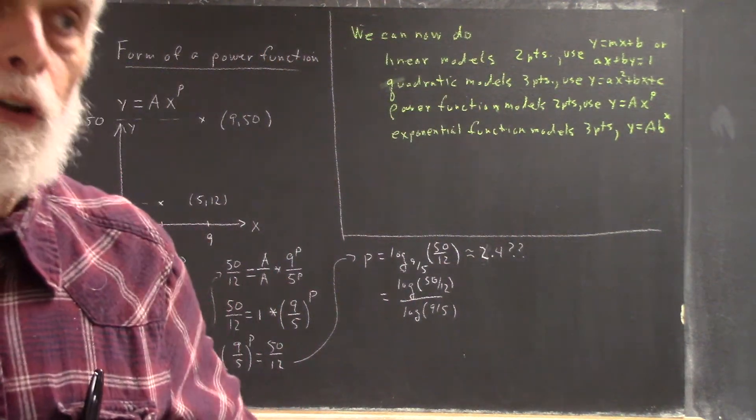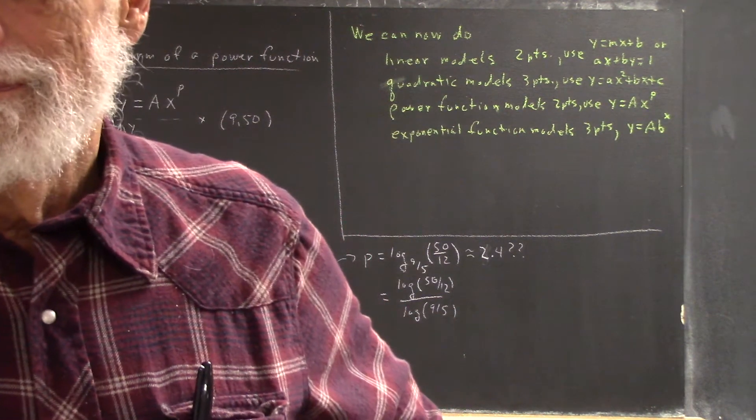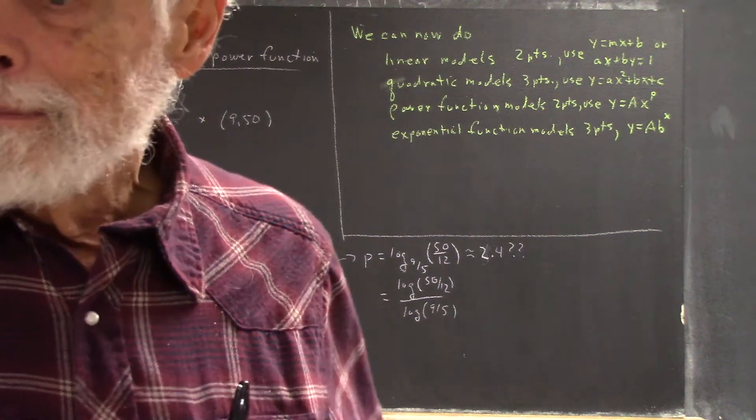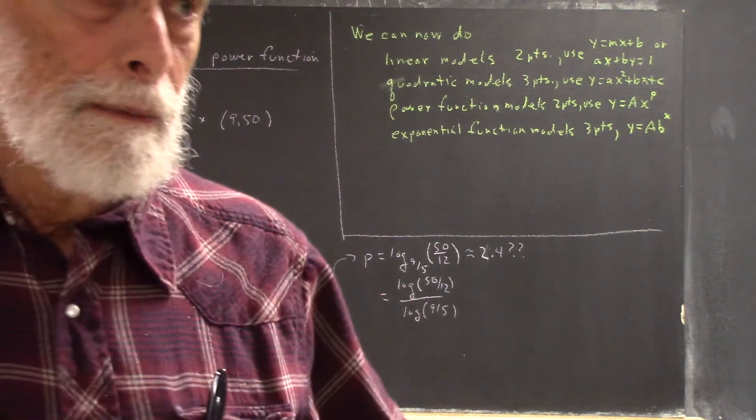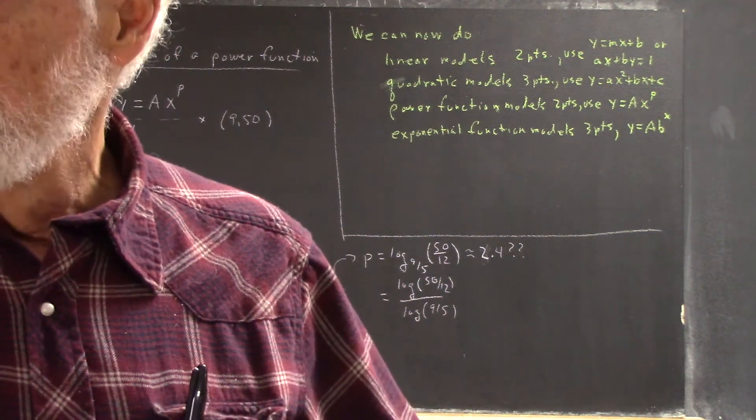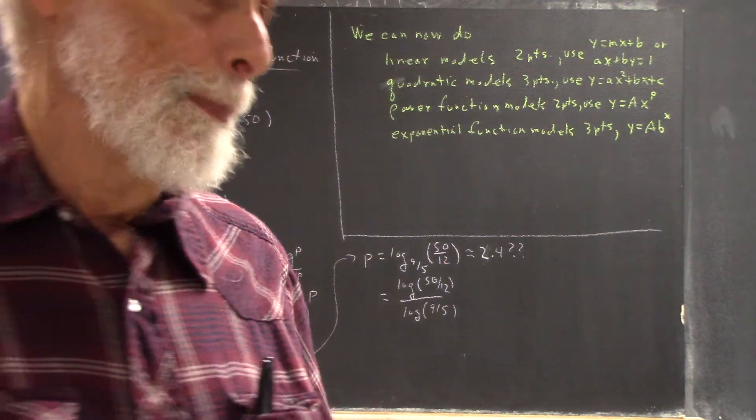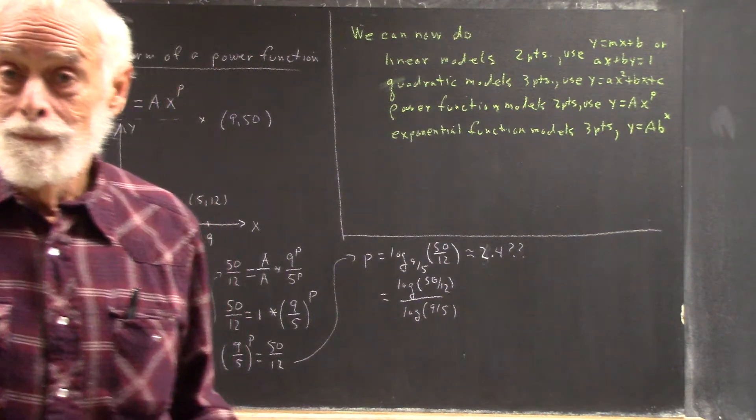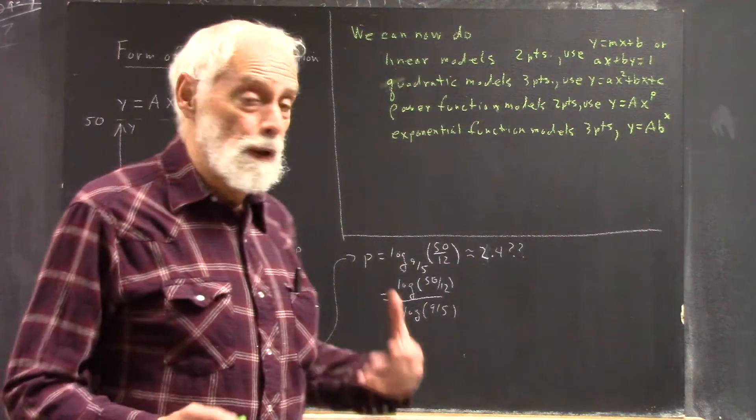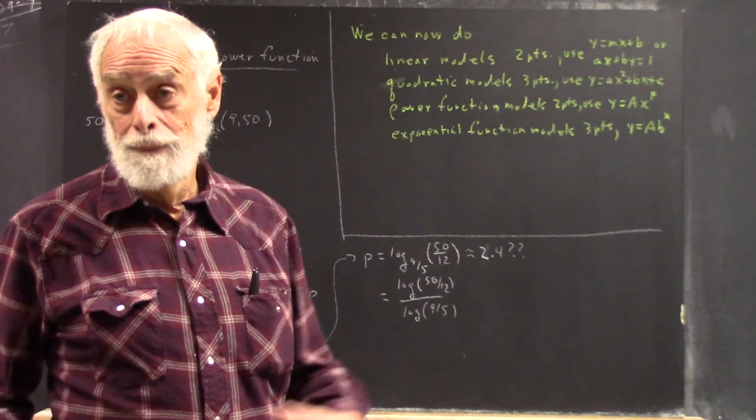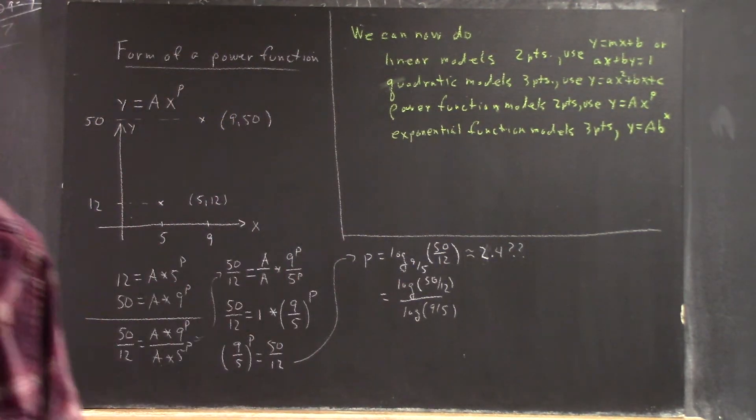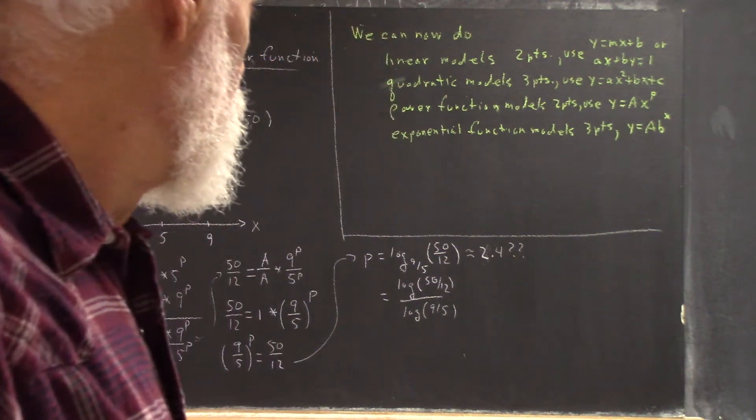Now, you need to know those forms. And when I say, on a test, do a power function model for these two points, you need to know that the power function is ax to the p. Exponential function, you need to know it's y equals a times b to the x. And there are other forms that we can use and we'll develop. So you simply have to know those forms.